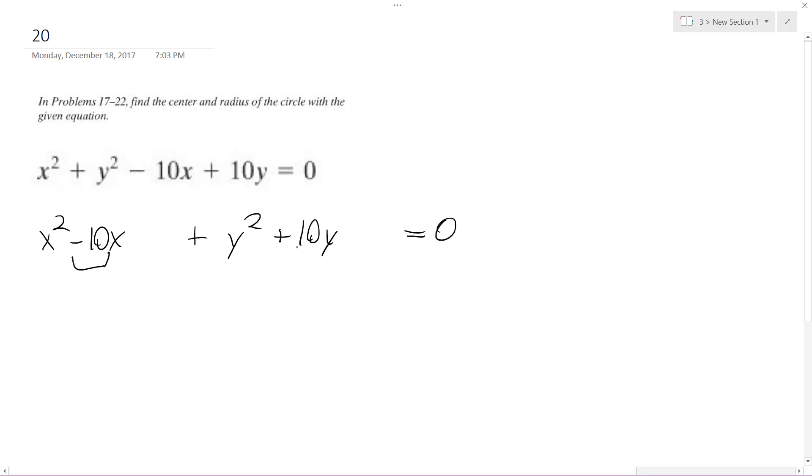So half of this, complete the square, same for both properties. So I'm going to get x squared minus 10x, then half of this squared is plus 25, kind of a similar thing with y.